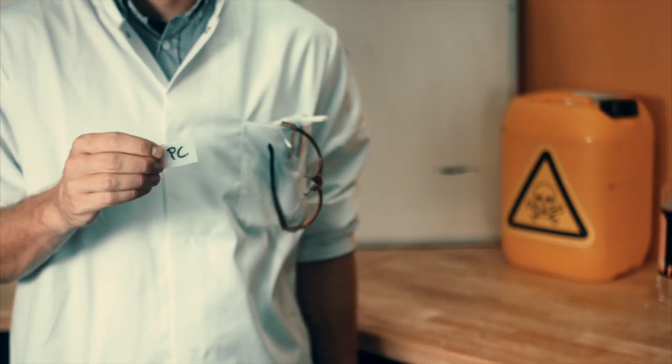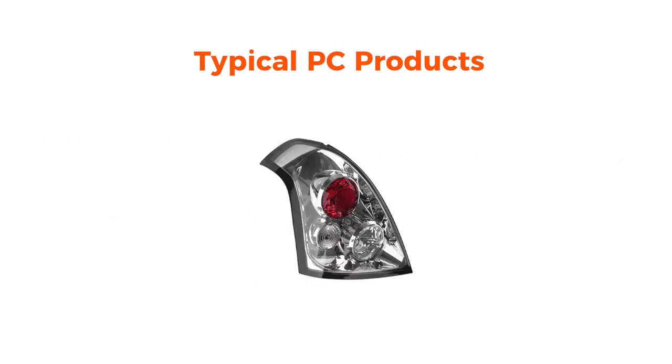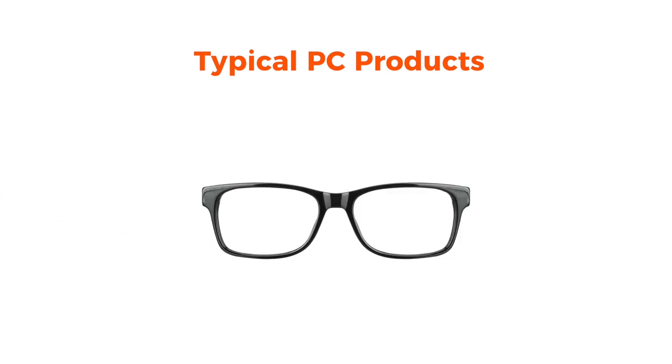Polycarbonate, PC. You can recognize polycarbonate by its glass-like appearance. It's solid and highly transparent. This makes it a perfect candidate for street lamps and car lights. Polycarbonate even helps people to see better, as it's used in glasses more and more often.